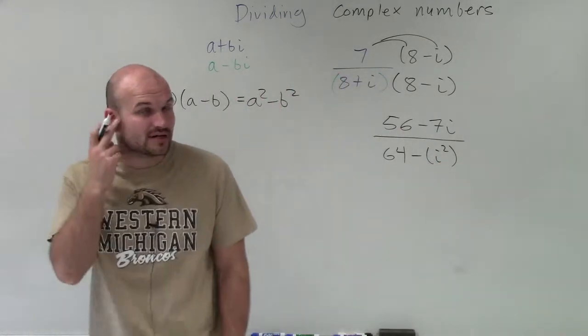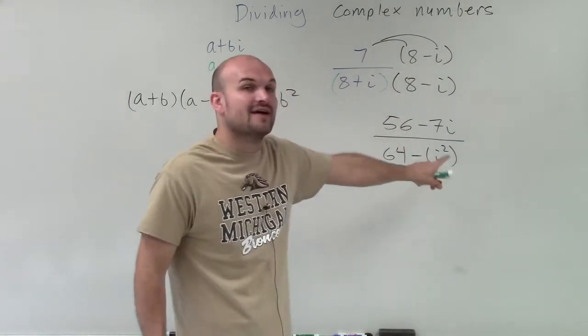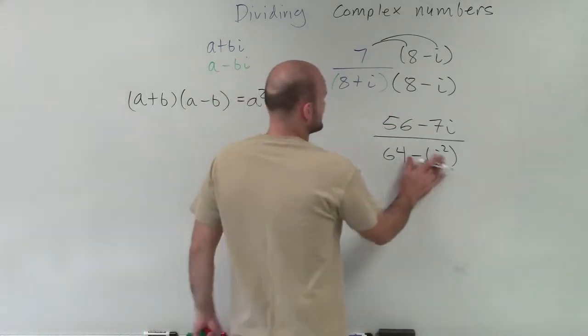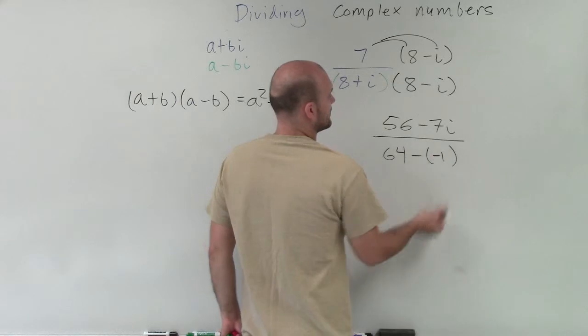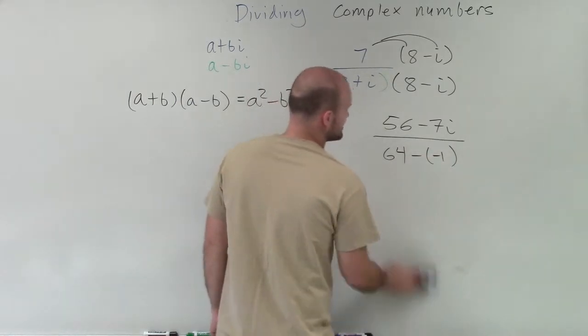It has to be very, very important that we're careful with our parentheses. This is i times negative i. So it's a negative i squared. i squared represents a negative 1. 64 minus a negative 1 ends up equaling 65.